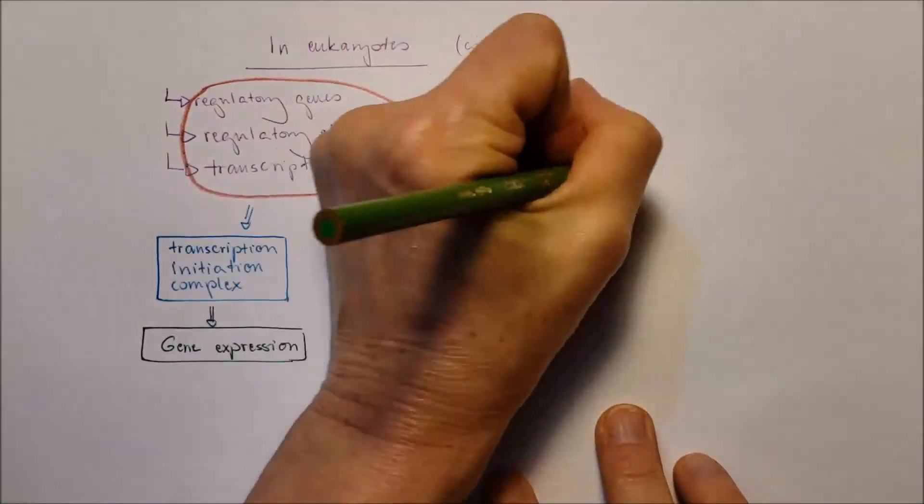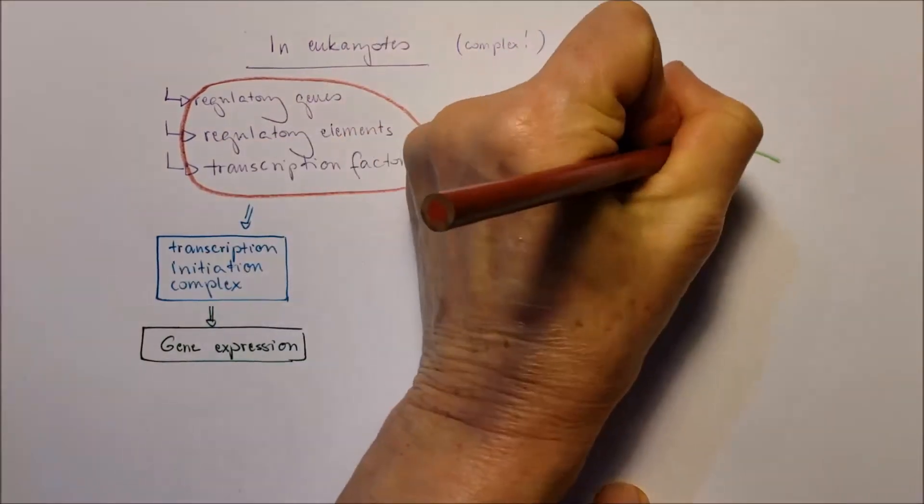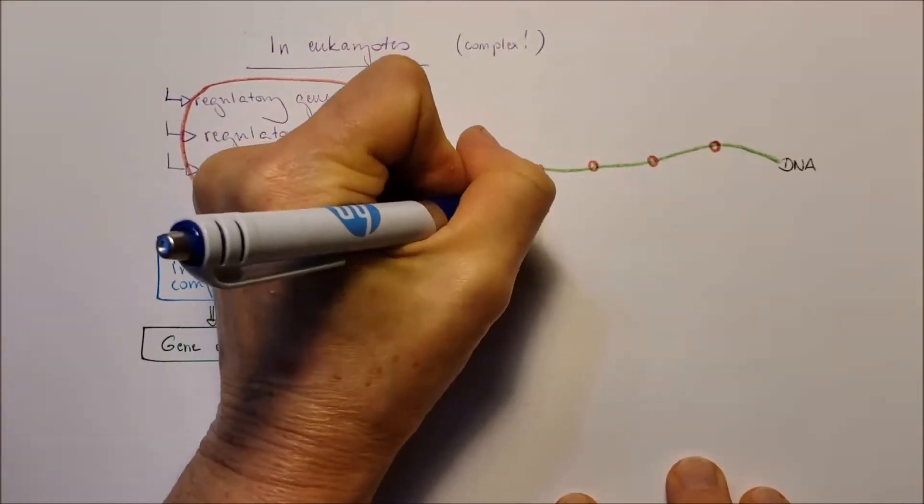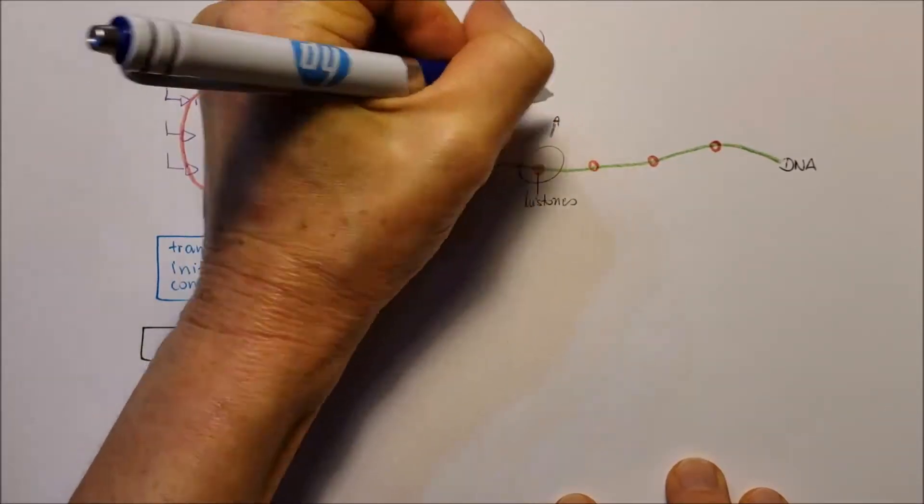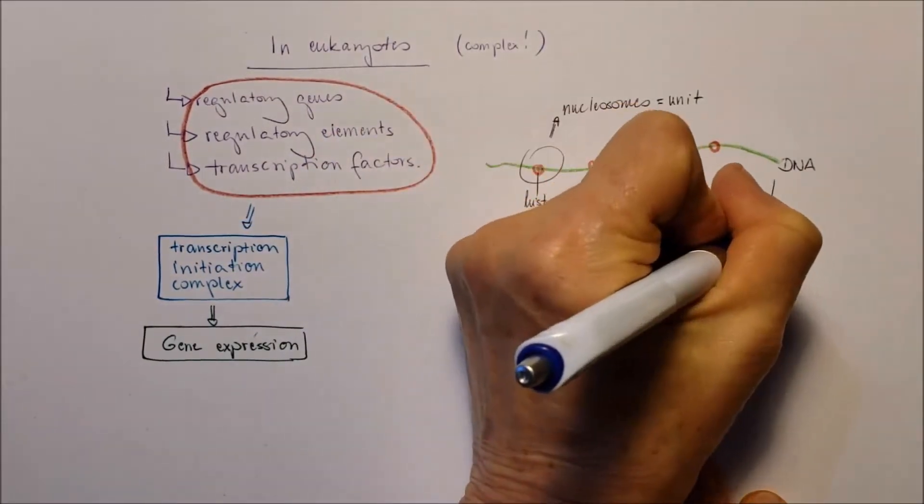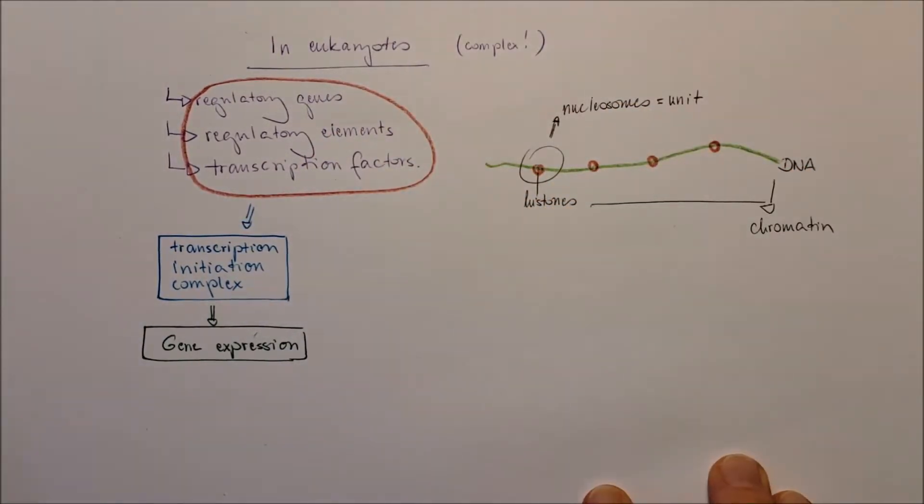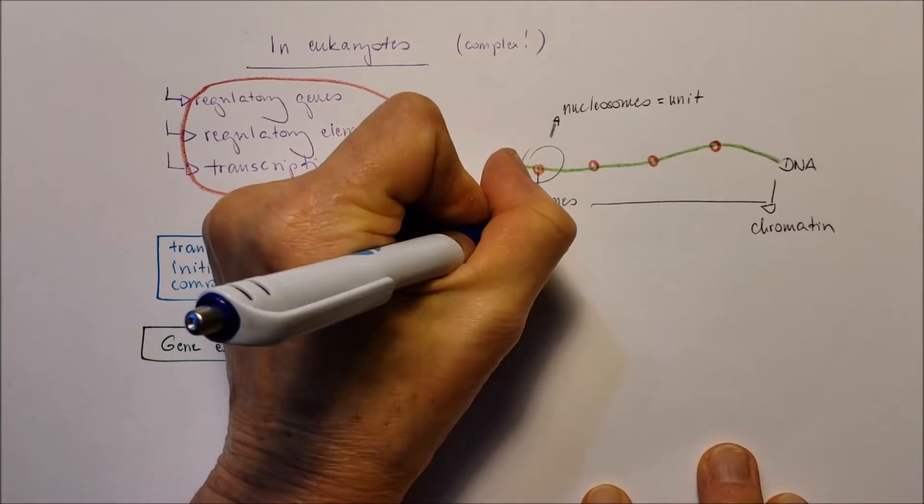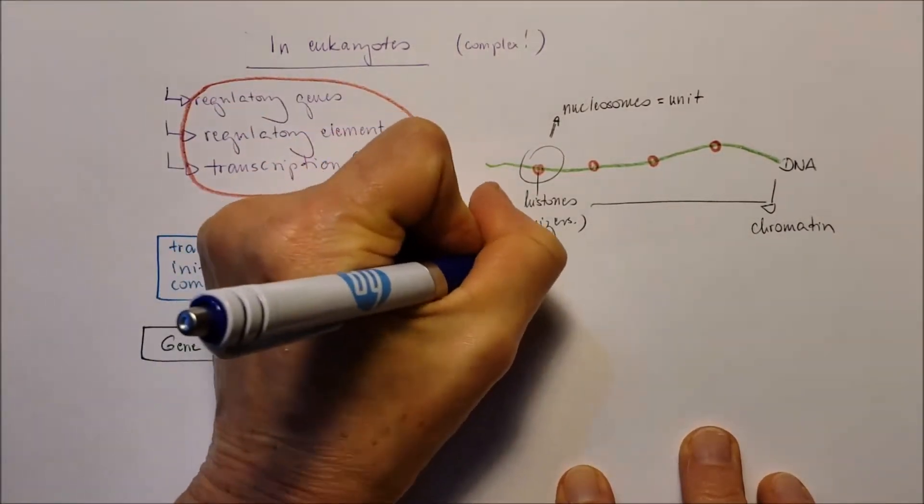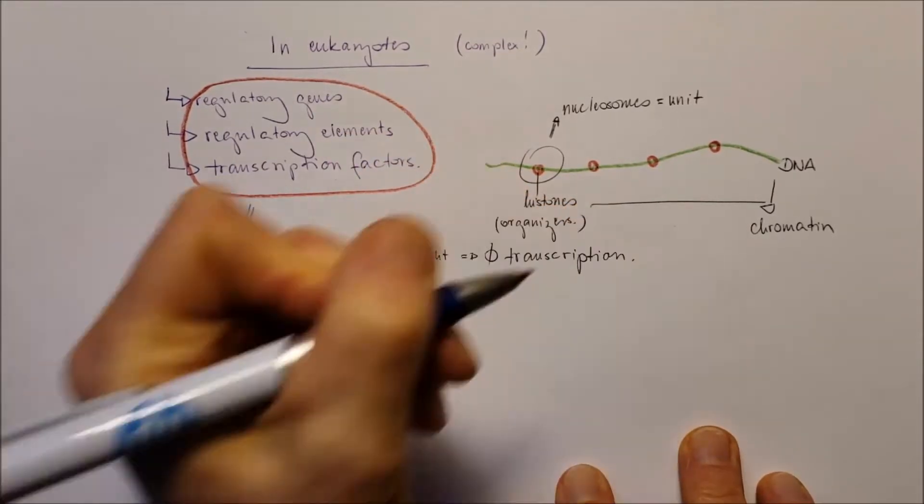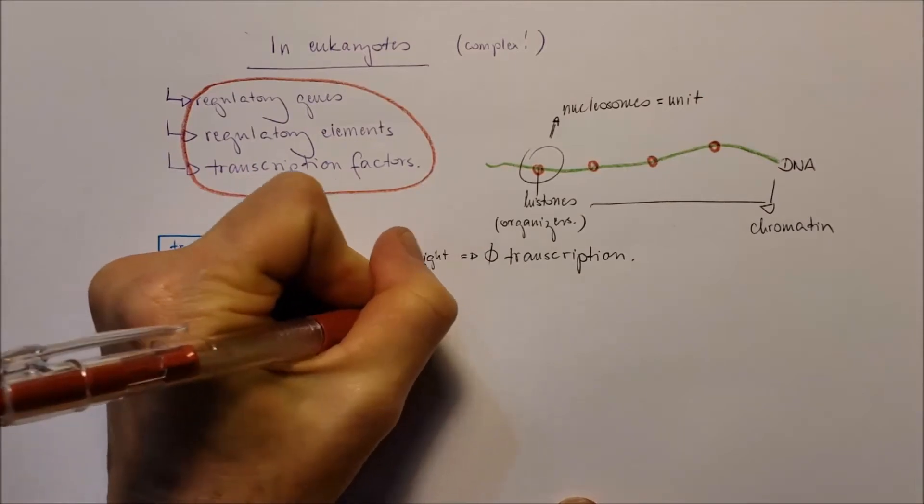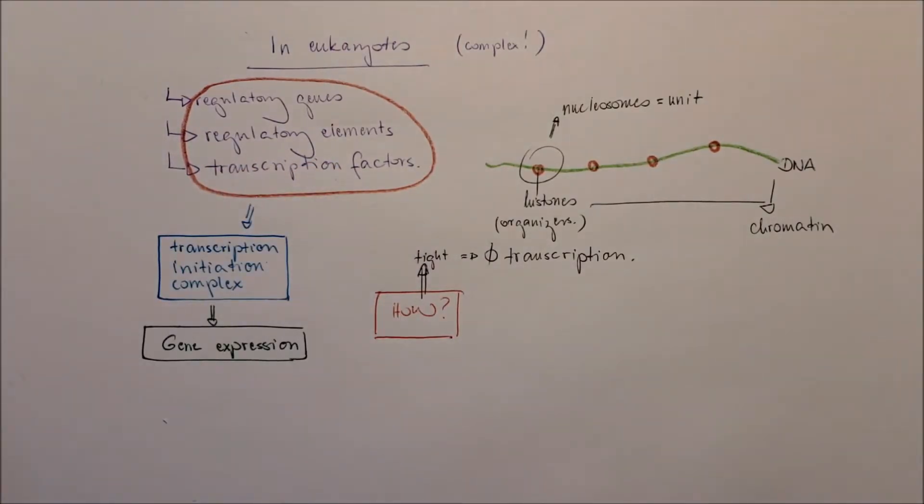Here is the DNA, and the histones are on the DNA forming the chromatin. The histones and DNA are the unit packages that form the nucleosome, and the histones are acting as DNA organizers. When it's tightly bound, the DNA, there's no transcription. How is that going to happen, the tightly bounding part?